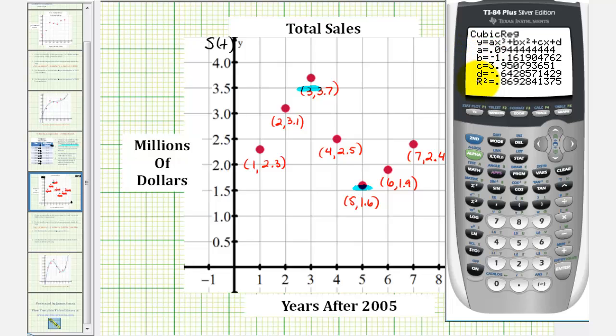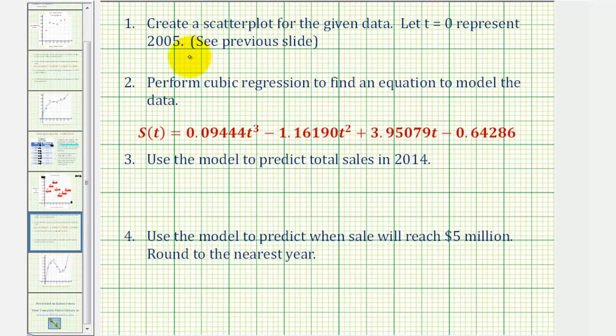We are going to round a, b, c, and d to five decimal places. So number one, we wanted to create a scatter plot, which we already did. Number two, we performed cubic regression. And this is our model, where the values of a, b, c, and d have been rounded to five decimal places, and subbed into our cubic function. We replaced x with t, and y with s of t.